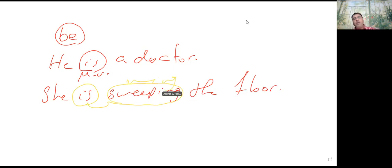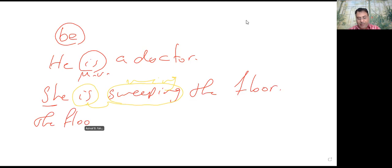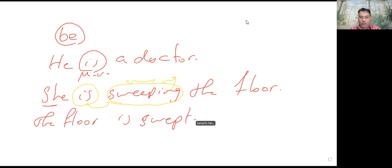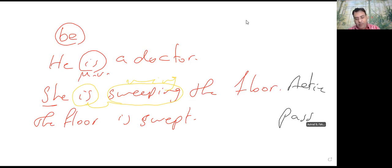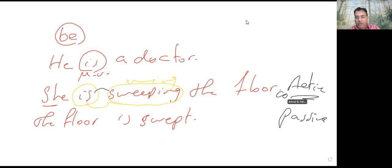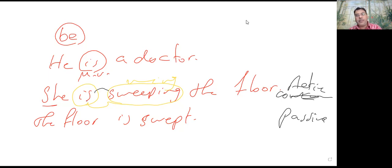الـ form اللي بتيجي بعد verb to be مش form واحدة بس. ممكن أقول 'she is sweeping the floor' — وده active، وممكن أقول 'the floor is swept' — وده passive. لو جات active مع verb to be، بيعمل continuous tense. لو جات passive، بيعمل passive form.